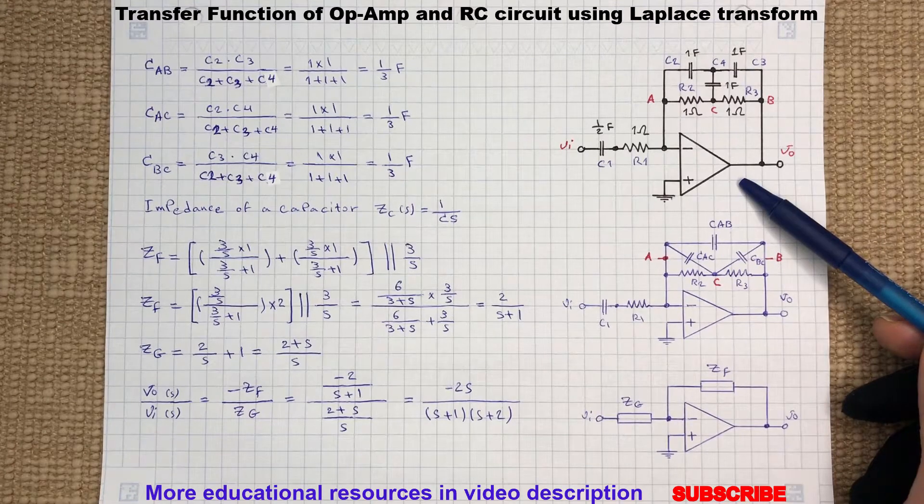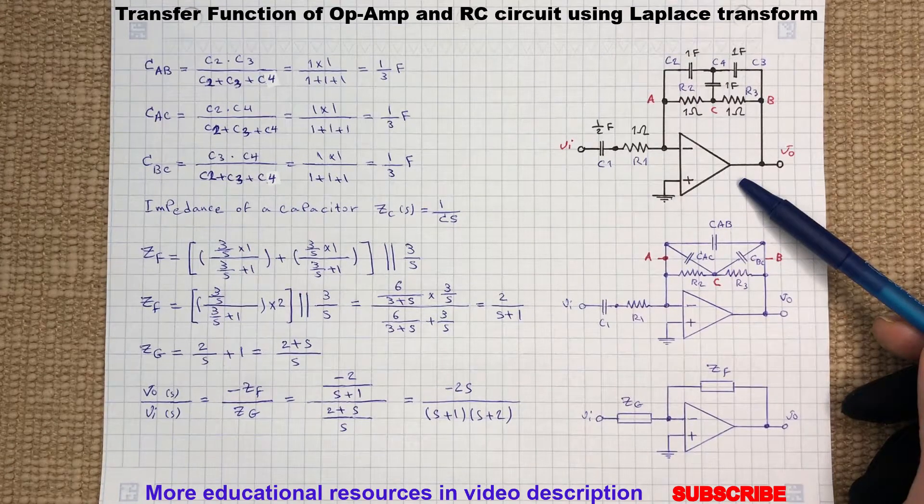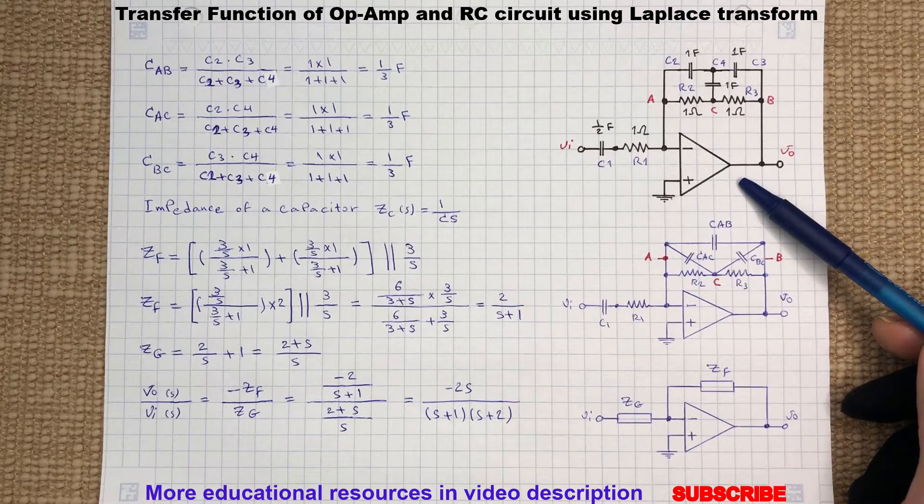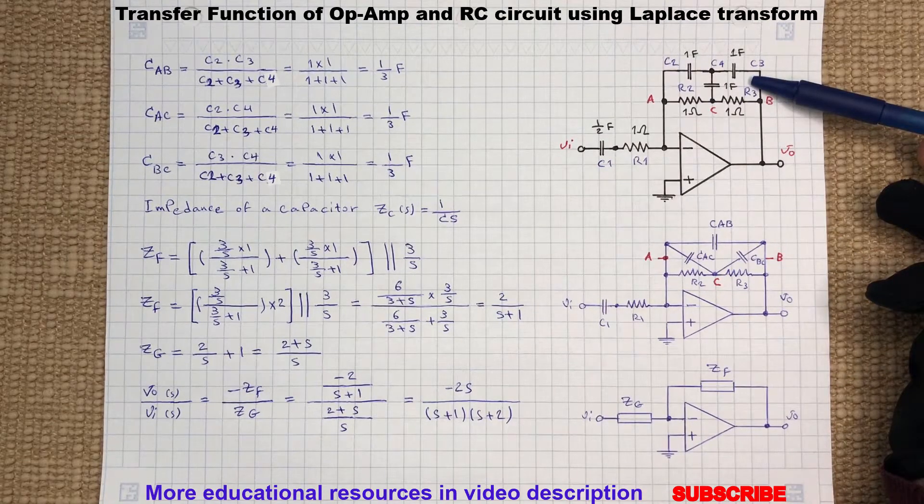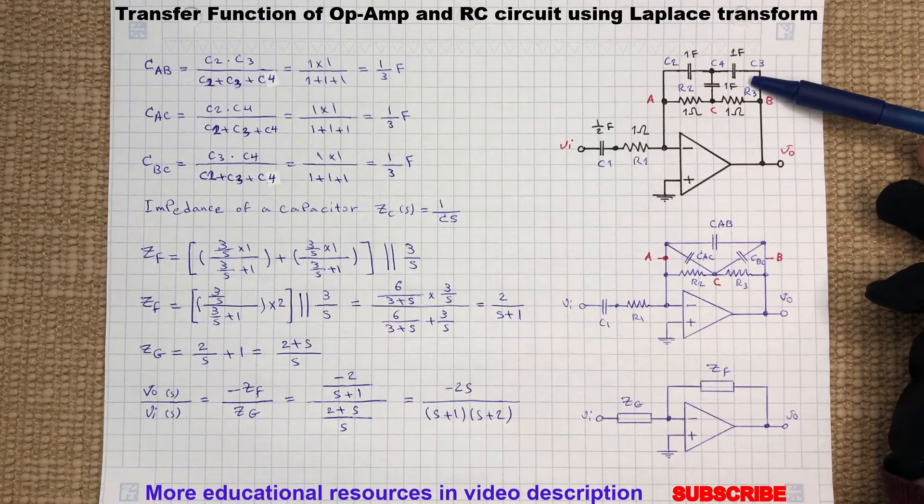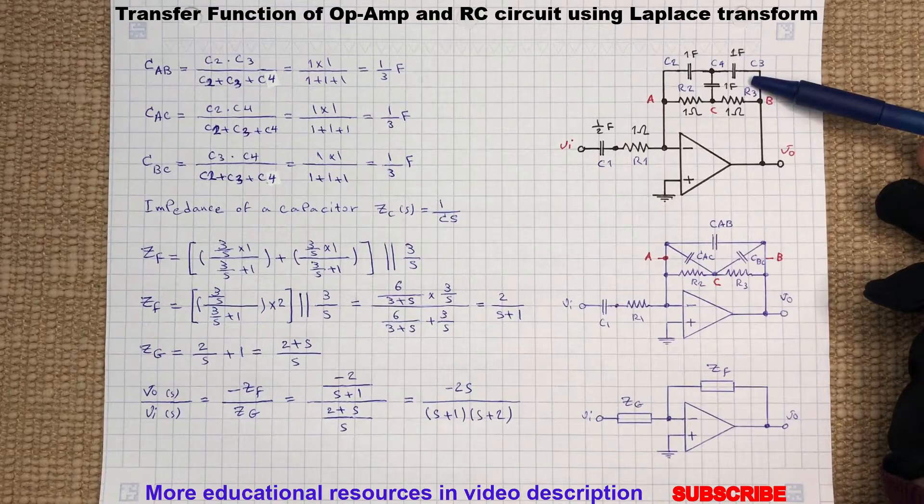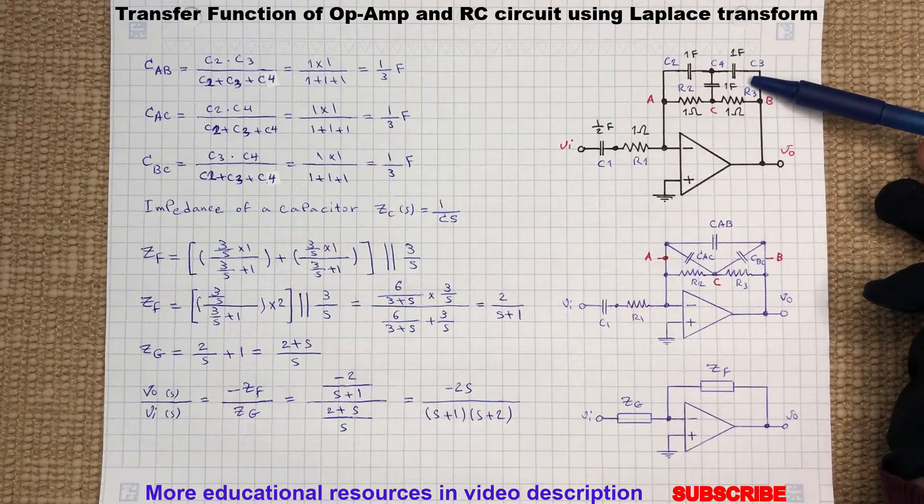This is an inverting op-amp circuit and today we are going to find the transfer function VO to VI using the Laplace transform. To begin, we will simplify this star or Y network containing capacitors C2, C3, and C4 to a delta configuration.